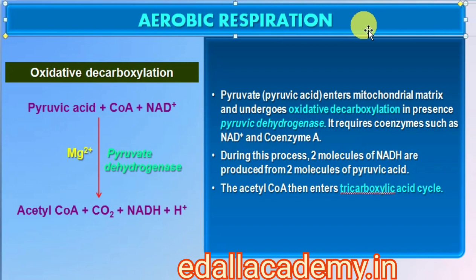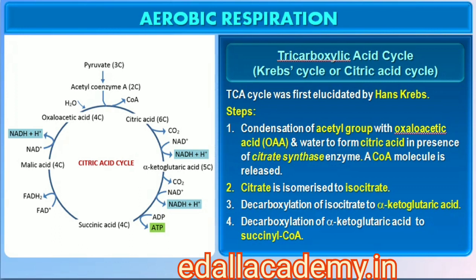During this process, two molecules of NADH are produced from the metabolism of two molecules of pyruvic acid produced from one glucose molecule during glycolysis. The acetyl-CoA then enters a cyclic pathway — the tricarboxylic acid cycle, more commonly called the Krebs cycle, after the scientist Hans Krebs who first elucidated it. The TCA cycle starts with the condensation of the acetyl group with oxaloacetic acid (OAA) and water to yield citric acid, catalyzed by the enzyme citrate synthase, and a molecule of CoA is released.